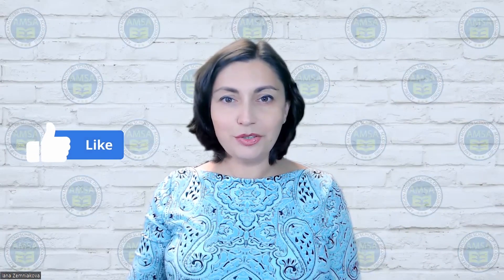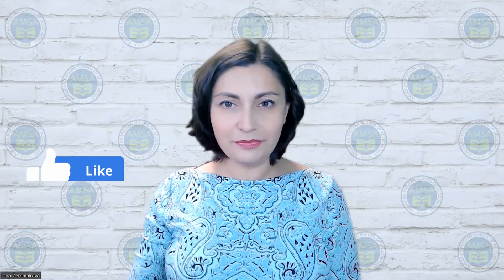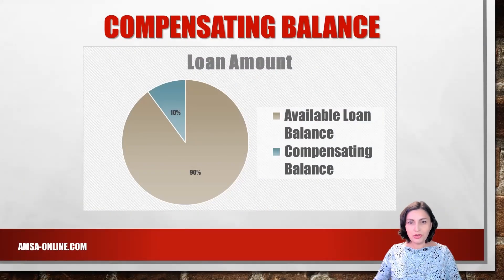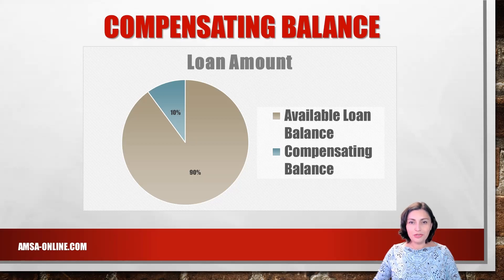The purpose of the compensating balance is to reduce the lending cost for the lender. The lender can invest the cash located in the compensating bank account and keep some or all of the proceeds. The borrower may be granted a somewhat lower interest rate. However, the borrower is also paying interest on a net loan balance that is smaller than the amount of the loan, so the effective interest rate for the entire arrangement is higher.